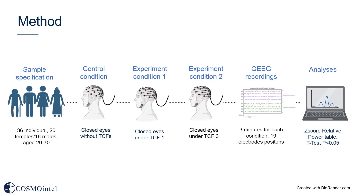QEEG recordings were conducted under three conditions: the control condition with closed eyes without the influence of any T-consciousness field; experimental condition 1 with closed eyes under the influence of T-consciousness field 1; and experimental condition 2 with closed eyes under the influence of T-consciousness field 3. Each QEEG recording session lasted for 3 minutes, utilizing 19 electrodes positioned on the head to capture brainwave activities.